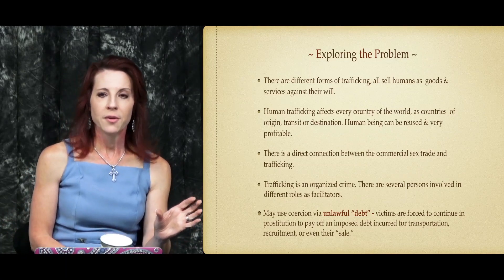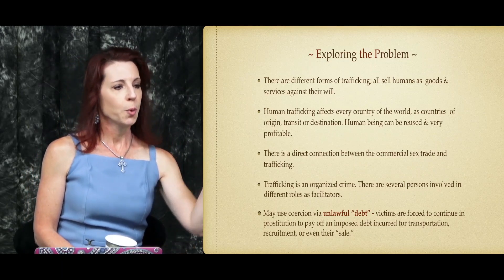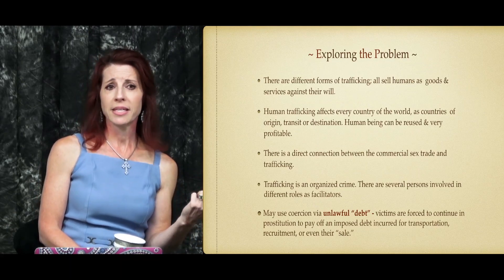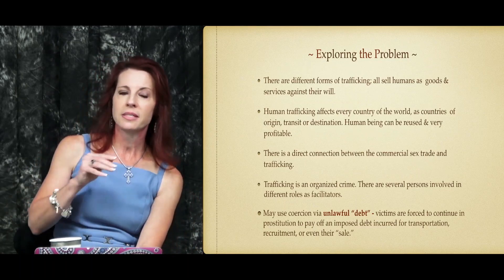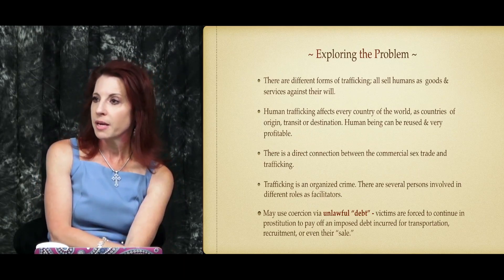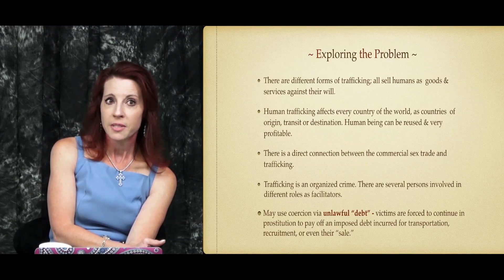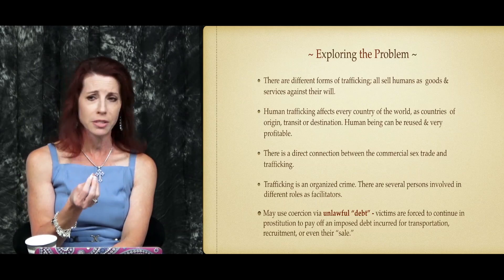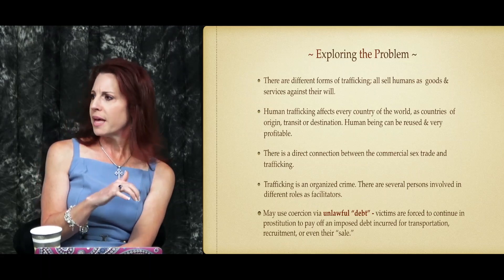For example, a person forced to work as a house servant who is also forced to perform sexual acts fits two different forms of trafficking but may not be hitting the statistics properly. When you look at the statistics, know that the numbers are inherently going to be low. Victims are typically not identified, and if you try to Google statistics on trafficking, it's really difficult to find reliable numbers — even legitimate organizations funded by the government will have incongruent statistics with one another.